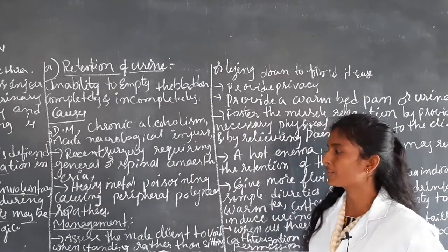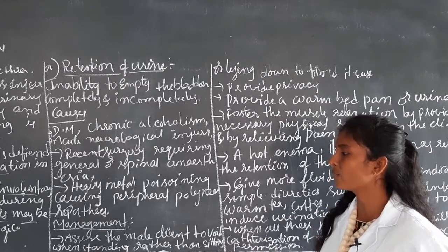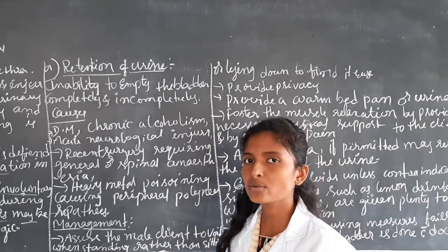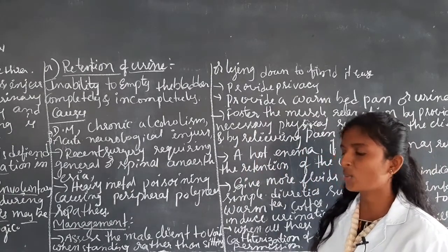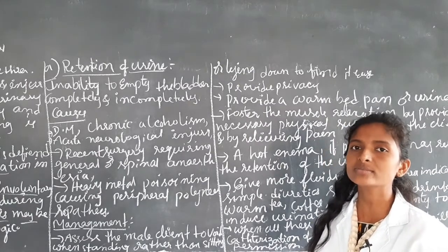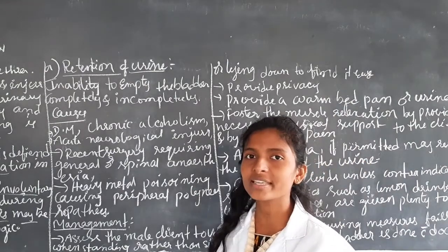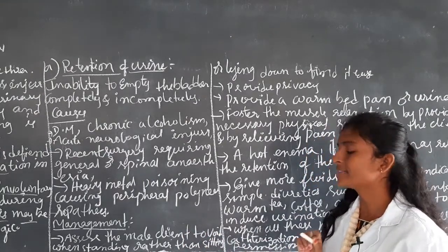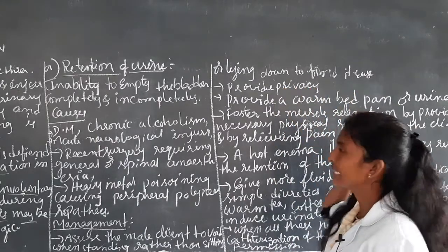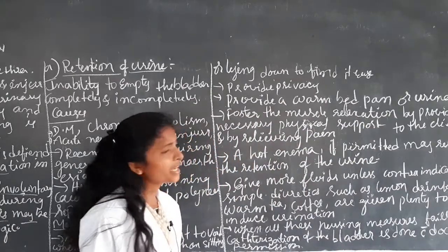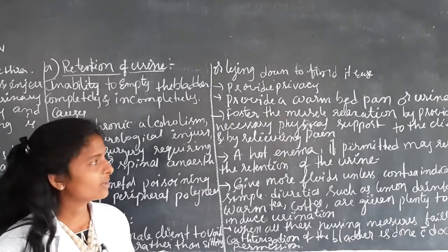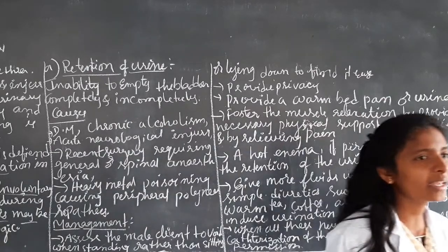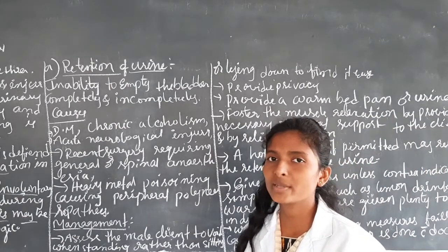What is the management for retention of urine? The first thing is to assist the male client while standing rather than sitting or lying down, to make it easier to void. The nurse has to provide privacy to the patient. Next, provide a warm bedpan or urinal.